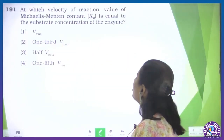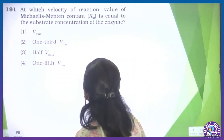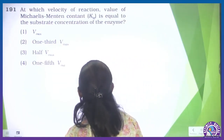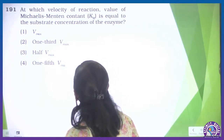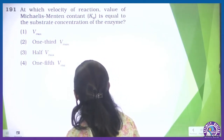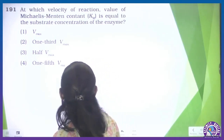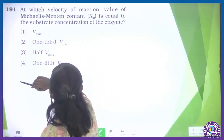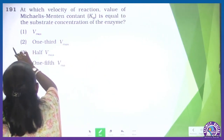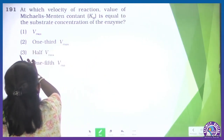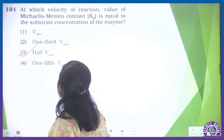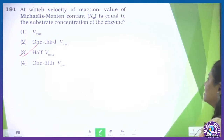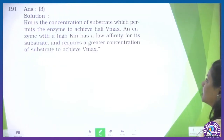Question 191: at which velocity of the reaction is the value of the Michaelis-Menten constant equal to the substrate concentration of the enzyme? It is half of Vmax — when the reaction velocity is equal to half the maximum velocity (Vmax), the Michaelis-Menten constant equals the substrate concentration. So the third option is the correct one for question 191.